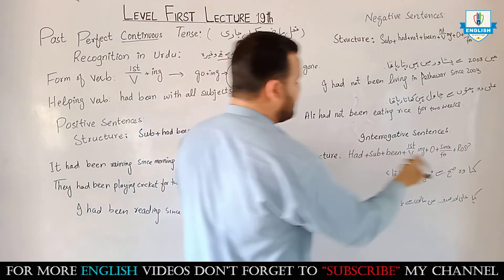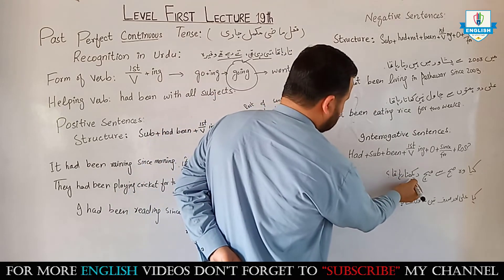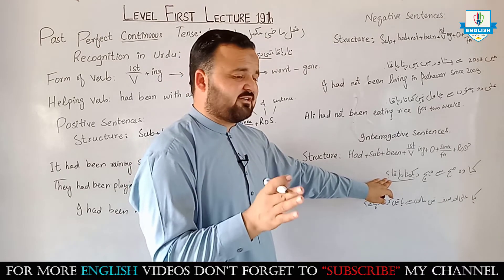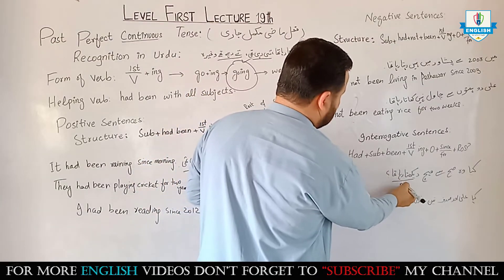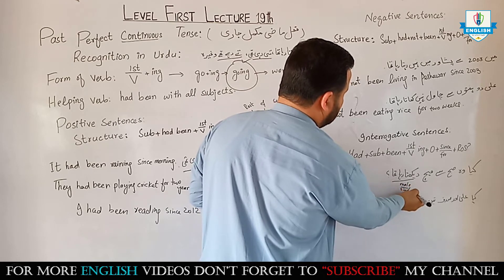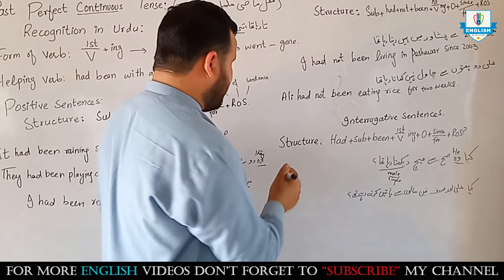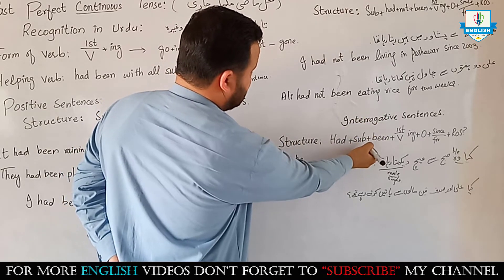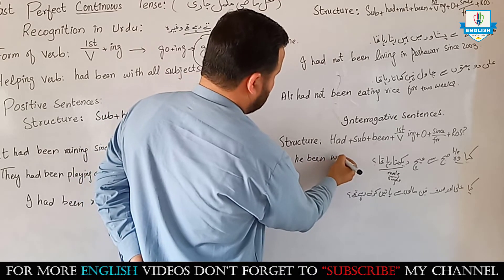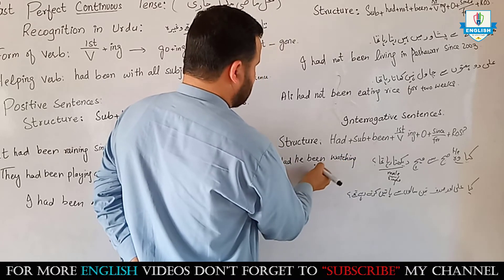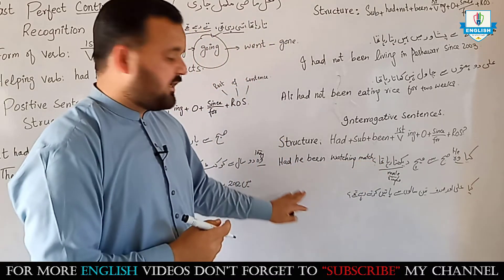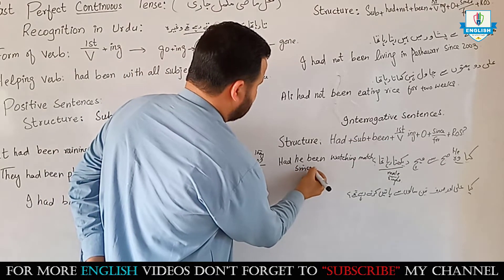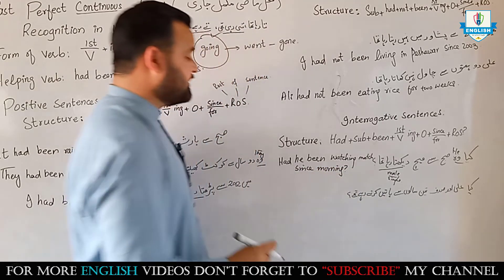Interrogative example: 'Kia woh subah se match dekhta raha tha?' The ending 'raha tha' shows this belongs to past perfect continuous tense, and it also tells us the subject is male and singular — so we use 'he'. The sentence becomes: Had he been watching match since morning? 'Subah' is a known time, so we use 'since morning'.